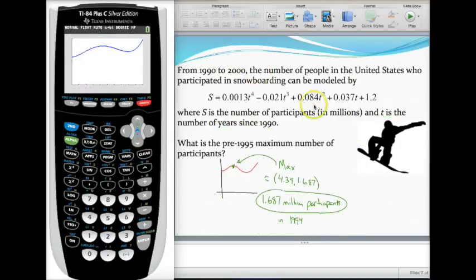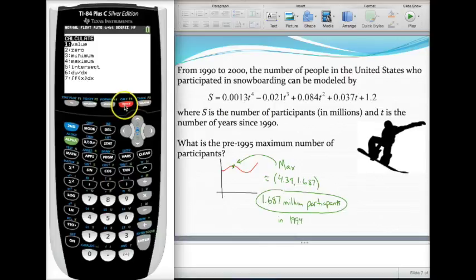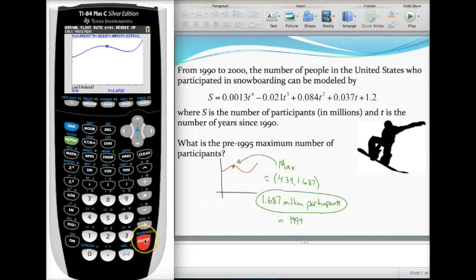For our last question they want us to find the pre-1995 maximum number of participants. 1995 would be about here so I want to find this maximum point. Recall that under calculate we also have a maximum option. Second trace, this time select maximum to find the high points of our graph. They're going to ask you three questions. We can't just press enter three times like we did before for intersection. This is the left bound right bound question. Move to the left of the high point and press enter.